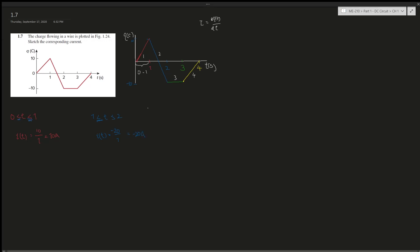For the third section, from t = 2 to t = 3, the current is zero because the change in y is zero — the charge is flat. So i(t) = 0 amperes.